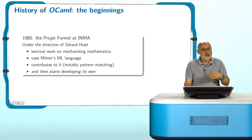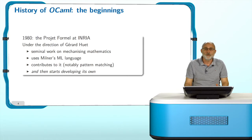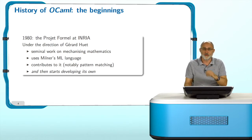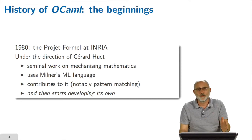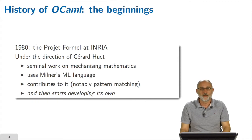Let's look at the history. Robin Milner started the ML language. In 1980, Gérard Rouet at INRIA in France was leading the Projet Formel, which did seminal work on mechanizing mathematics. To do this work, they used the first version of the ML language developed by Robin Milner and started contributing to it. For example, pattern matching was actually introduced by the people at INRIA into the ML language. And then, as it often happens, they started making a branch of their own, developing their own version to make it more fit to their particular application in mechanizing mathematics.